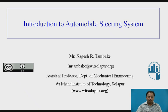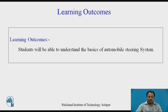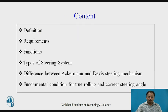Today we are discussing the topic that is Automobile Steering System. In this particular session, we are discussing introductory things regarding Automobile Steering System. Learning Outcome: at the end of this session, students will be able to understand the basics of Automobile Steering System. In this session, we are going to discuss: Definition of Steering System, Requirements of Steering System, Functions of Steering System, Types of Steering System, Difference between Ackerman and Davis Steering Mechanism, and Fundamental Condition for True Rolling and Correct Steering Angle.